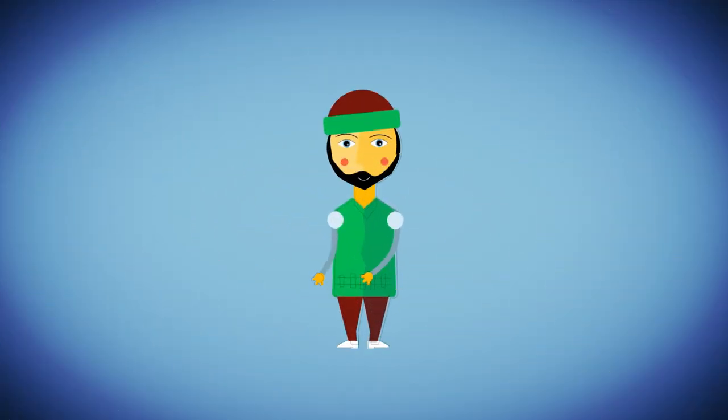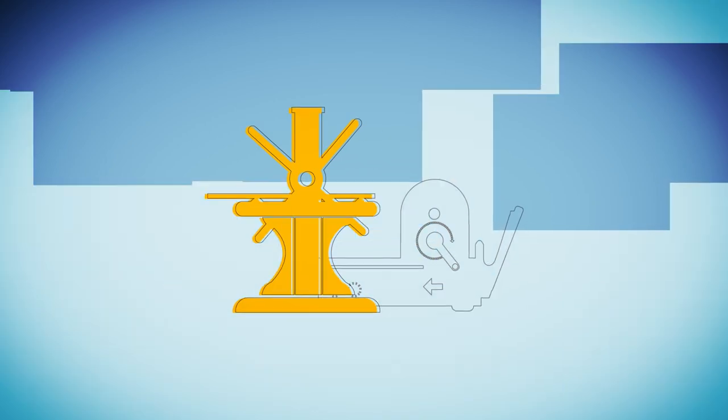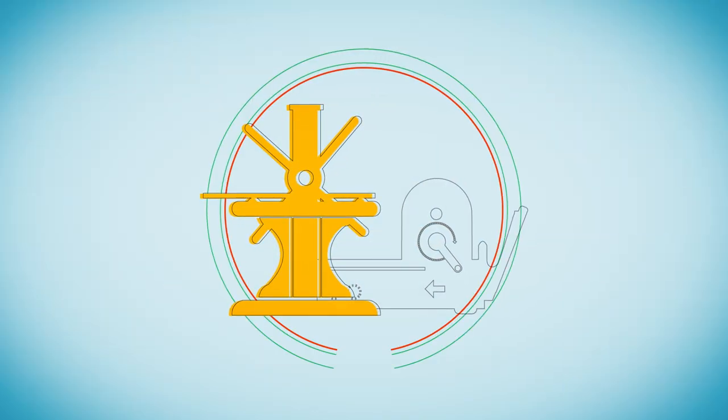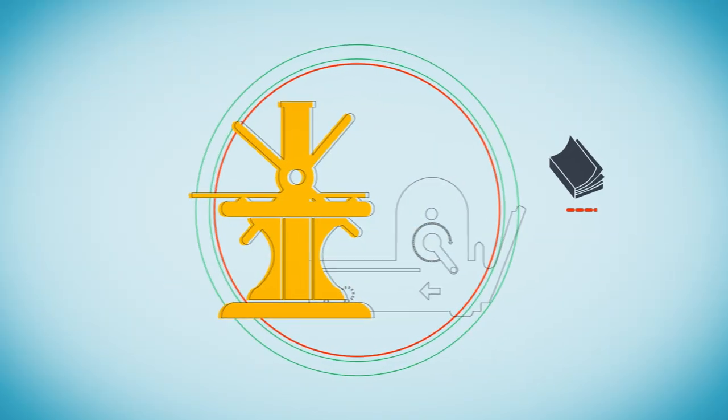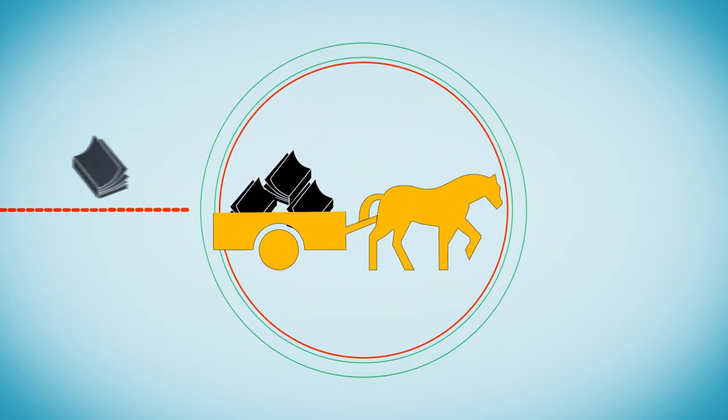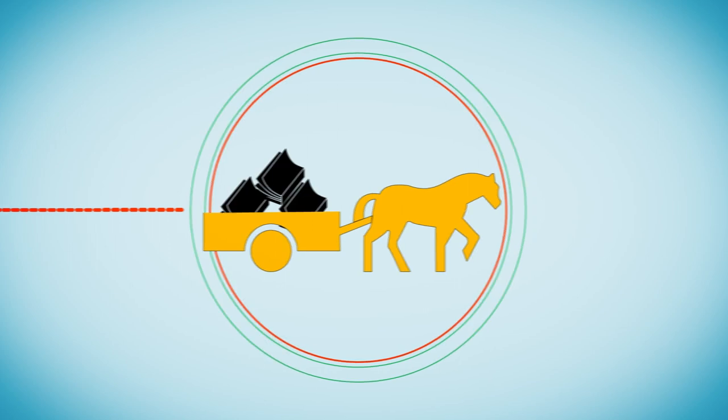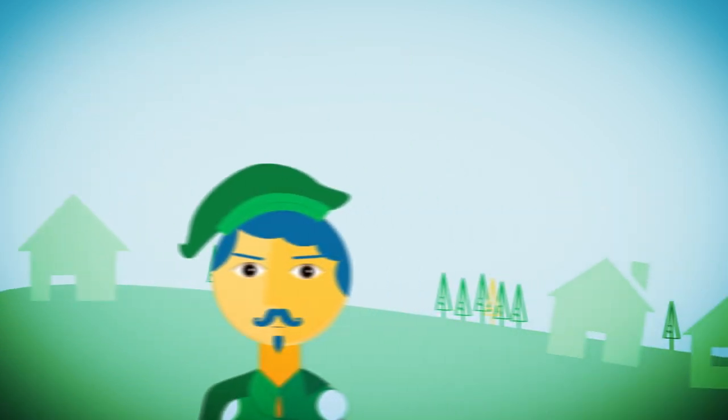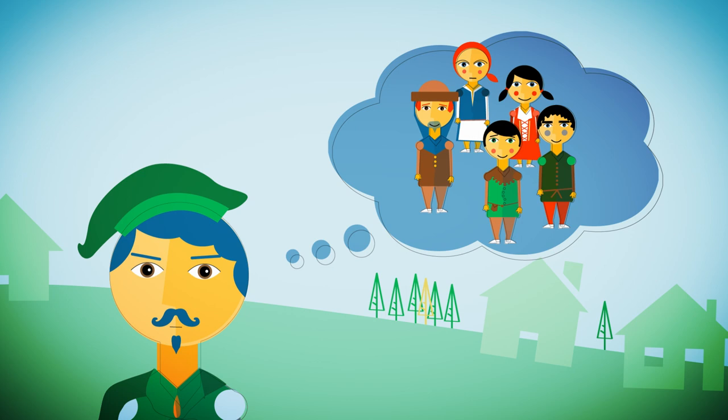Along came the first ever copying machine, the printing press. It forever revolutionized the way people spread information. Here at last was a cheap and quick way to make copies of books, and a very accurate one too. The writers, of course, were thrilled to have more published books and a lot more readers.